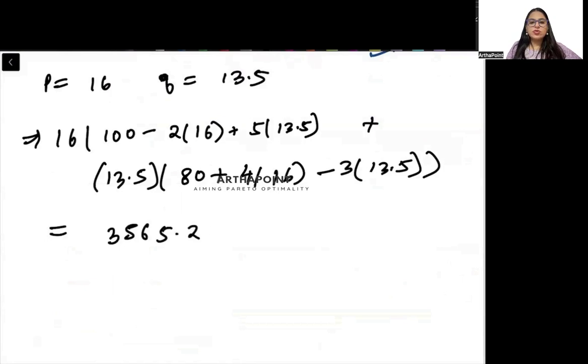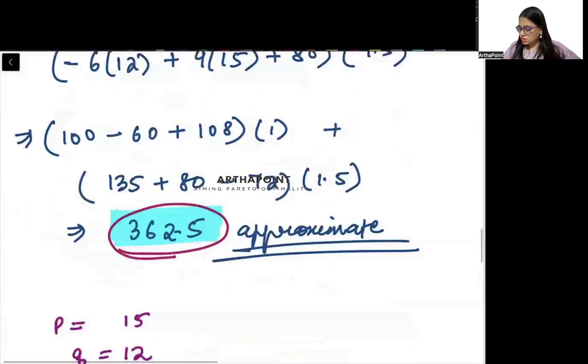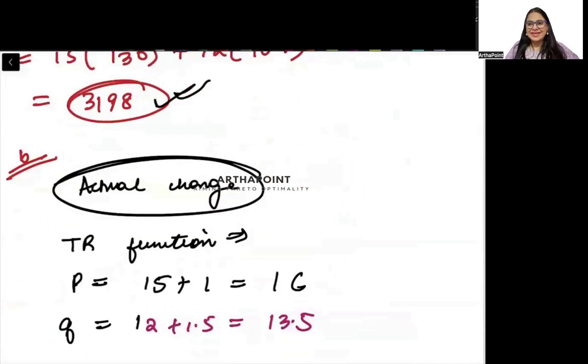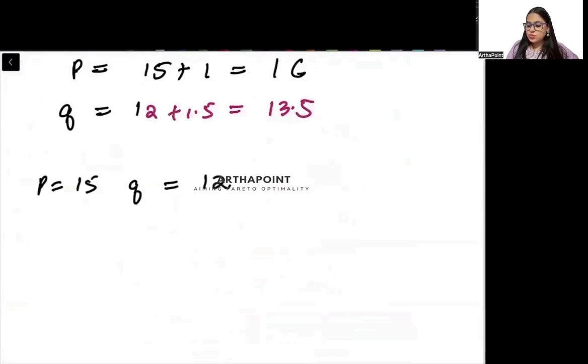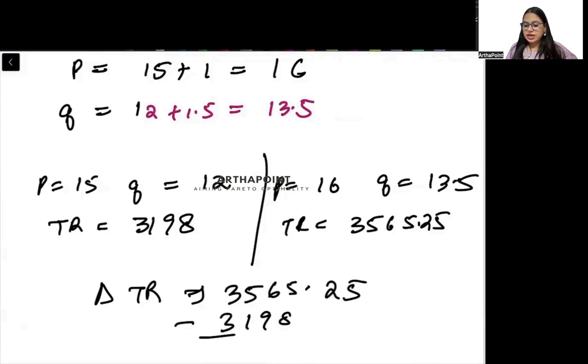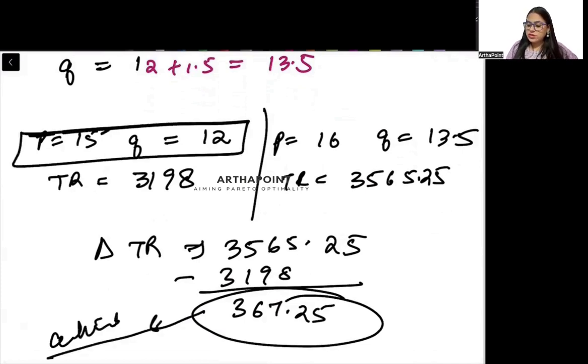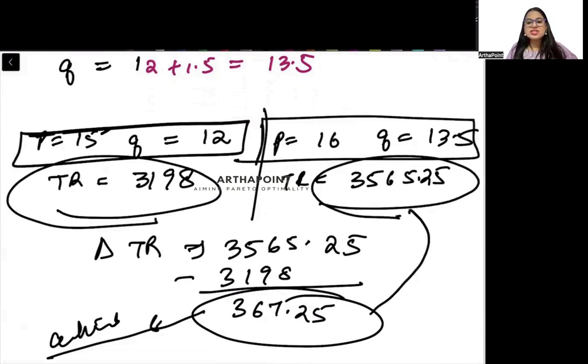When price was 15 for good X and 12 for the other, total revenue was 3198. Now when my price is 16.5 and Q the other price is 13.5, total revenue is coming out as 3565.25. So what is the change in total revenue? 3565.25 minus 3198, so it will come out as 367.25. This is the actual change because we have put the new prices in the function and calculated the new total revenue.